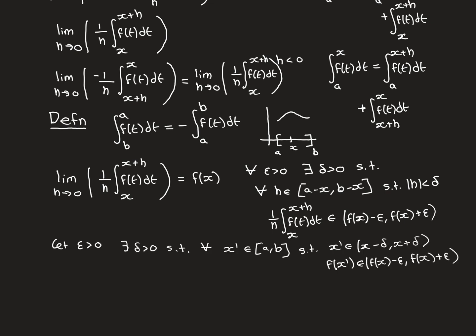To prove this, I'll let epsilon be greater than 0 and find a delta such that the condition holds. I'm going to use continuity of the original function f to produce this delta. Recall from the beginning of the video, one criterion for FTC1 to hold was that f must be continuous everywhere over the closed interval [a, b]. You might wonder why we demanded continuity rather than just Riemann-integrability — here is why: continuity is necessary for the fundamental theorem to hold, and this is exactly where we use it in the proof.